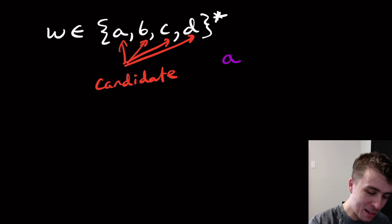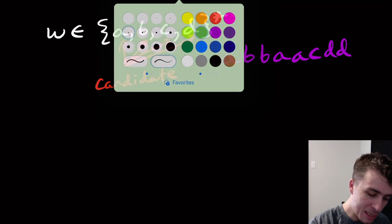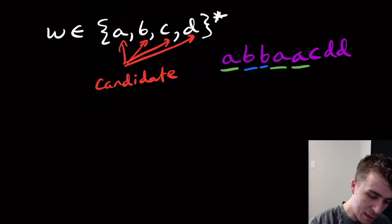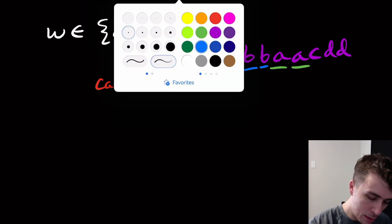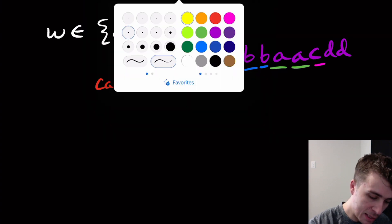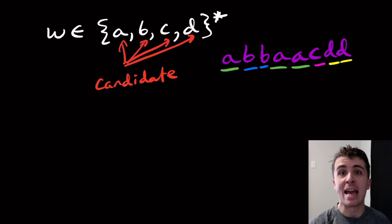So if we have like A, B, B, A, A, C, D, D, then what we can see is that A got three votes, candidate B got two, candidate C got one, and candidate D got two. So in this case, A won because A was the one who got the most votes.